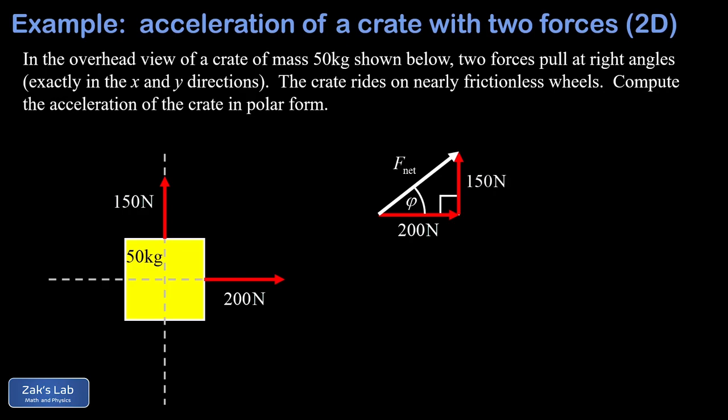So we label our right angle, and in addition to that, I labeled the angle of elevation of F net, and we labeled that with the Greek letter phi. So now we can actually start to do some calculations.